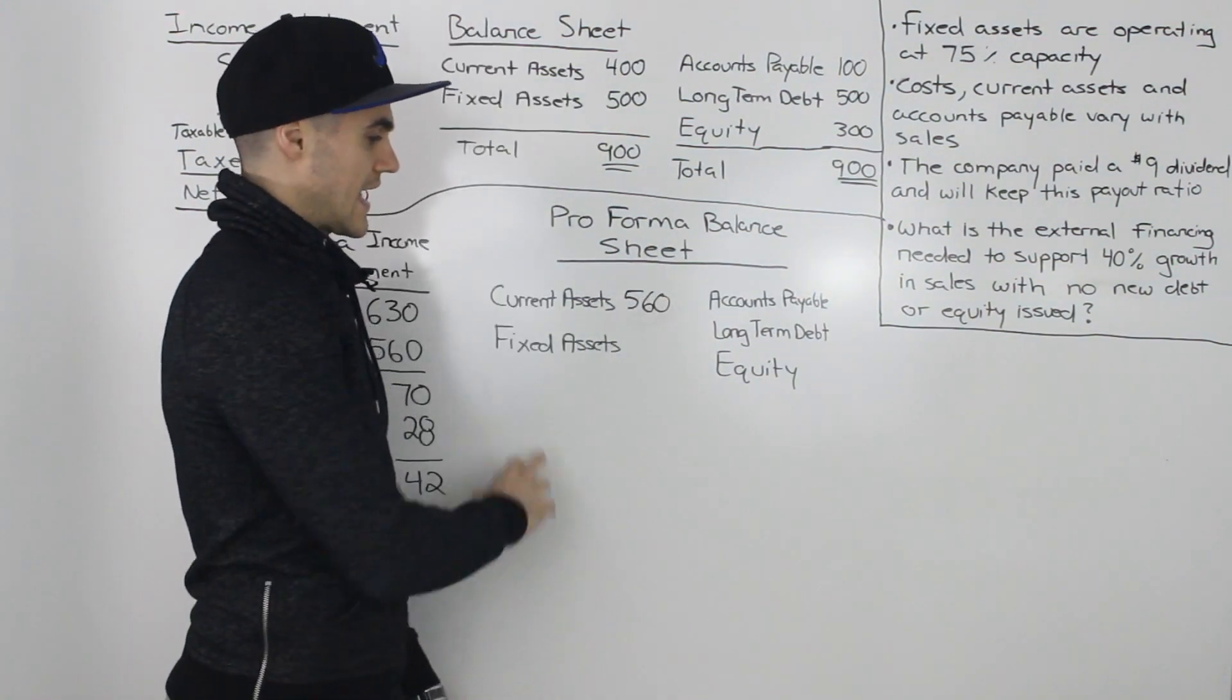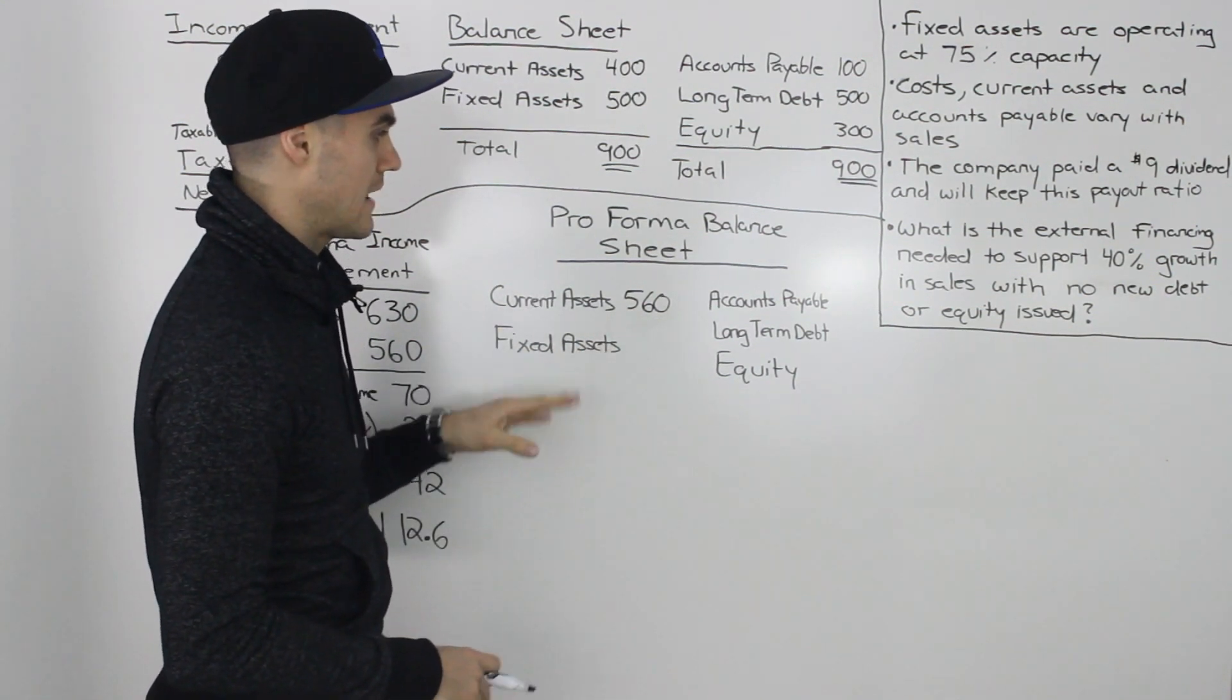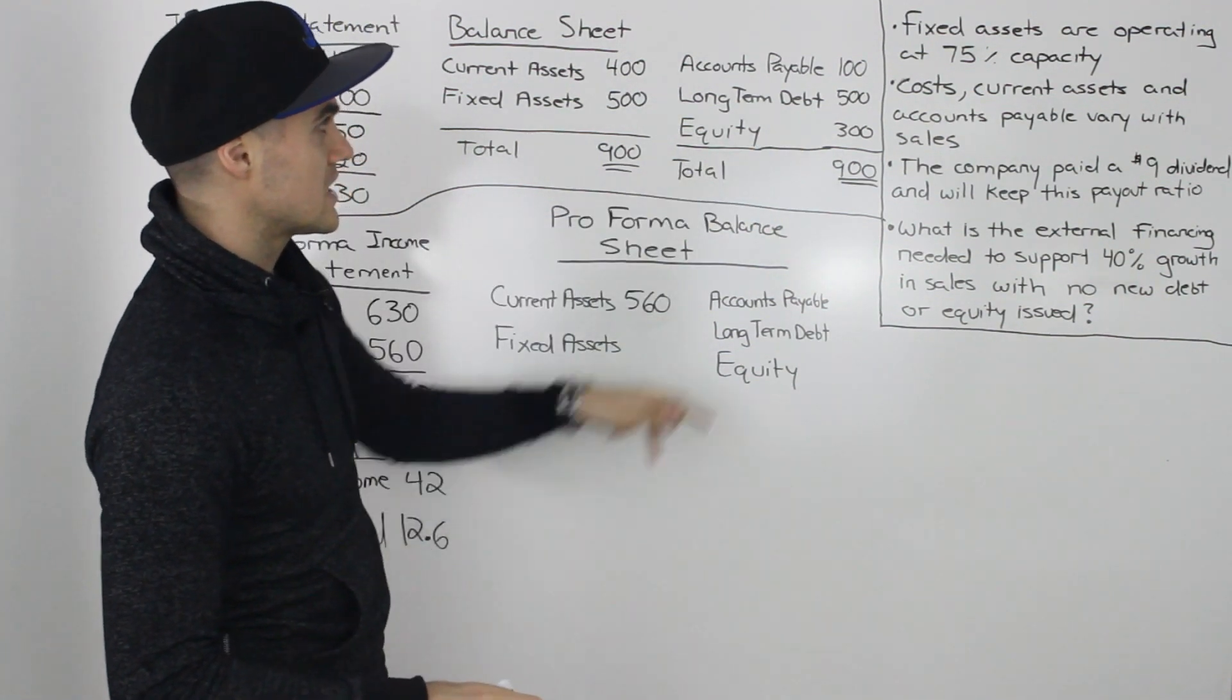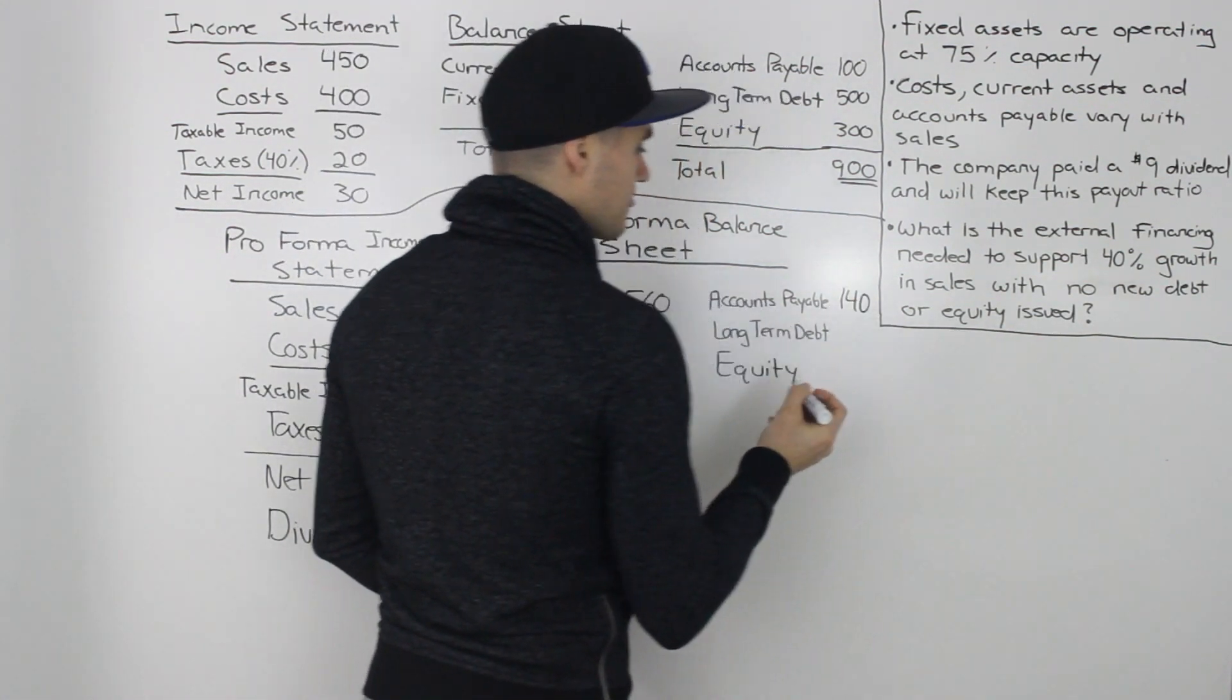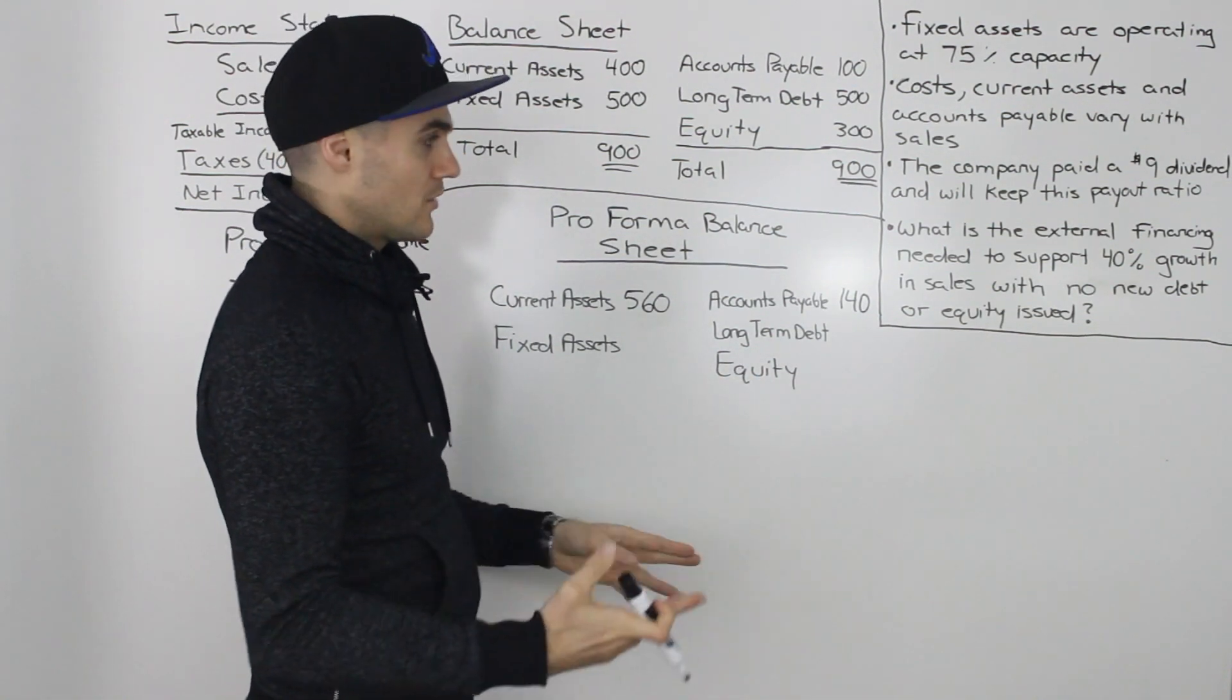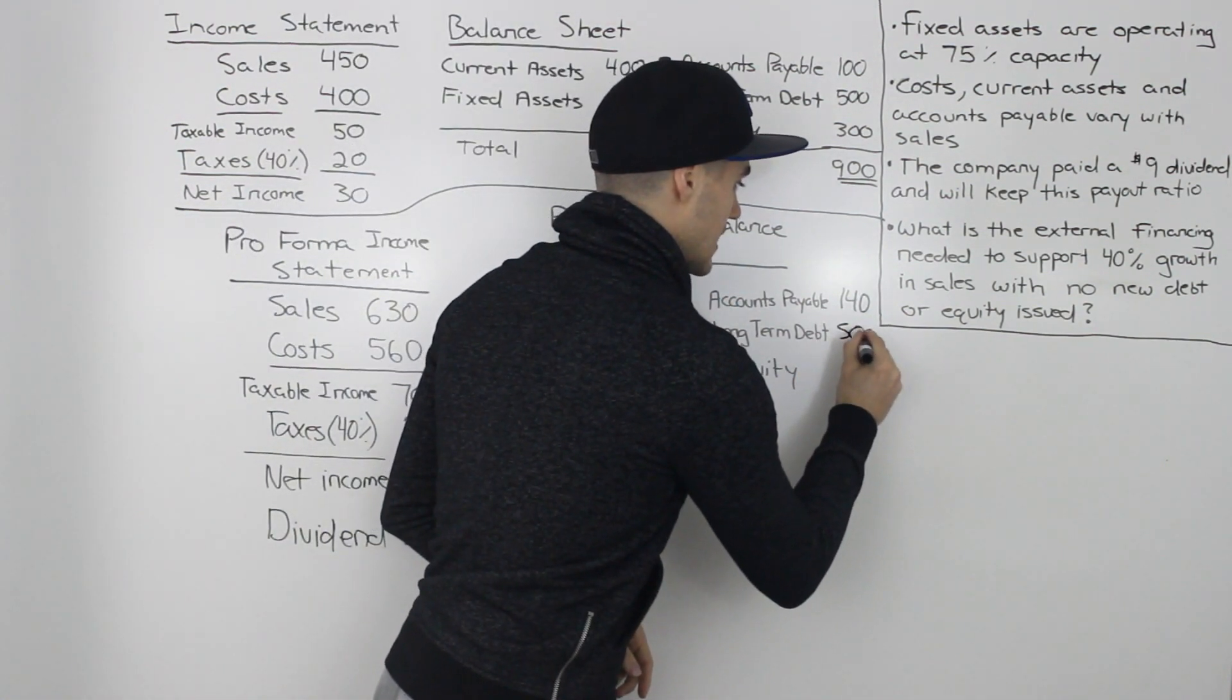Now the fixed assets, they don't vary with sales. And let's actually figure them out last. Let's figure them out at the end of the balance sheet. The accounts payable, we're told they vary with sales. So taking that $100, multiplying it by 1.4, we would get 140. We're told that we're not issuing any new debt or equity right here. So we know the long-term debt of 500 is going to stay the same.